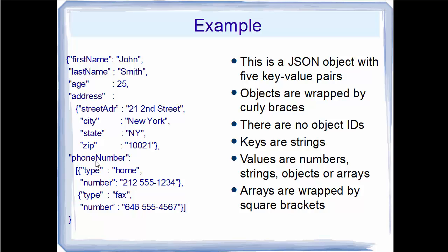For phone numbers, a person can have multiple phone numbers, so you define them as an array using square brackets. Inside the array you define two objects: the first object has type "home" and a number, the second has type "fax" and a number. So you are essentially creating an array of objects for the phone number field.